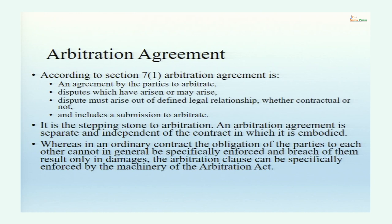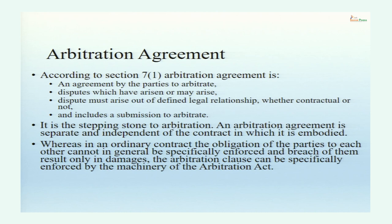Arbitration agreement is an agreement to arbitrate disputes. Arbitration agreement finds its definition in Section 7 of the Act. Section 7 has five subsections. Section 7(1) says arbitration is an agreement by the parties to arbitrate — to arbitrate disputes which have arisen or disputes which may arise. So you can enter into an arbitration agreement to resolve present disputes as well as future disputes. Those disputes must arise out of a defined legal relationship between the parties, which can be contractual or otherwise.